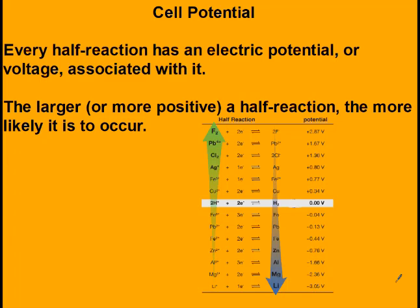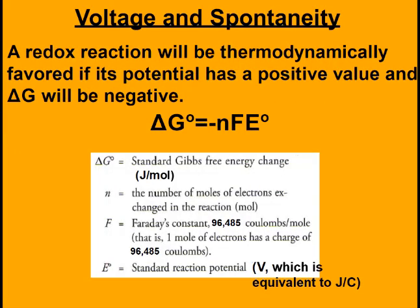Cell potential: every half reaction has an electric potential or voltage associated with it. The larger or more positive a half reaction, the more likely it is to occur. Fluorine gaining electrons to form fluoride ion has a very large E potential, while lithium gaining an electron to form lithium metal has a very negative potential. A redox reaction will be thermodynamically favorable if its potential has a positive value — if E is positive, delta G will be negative.